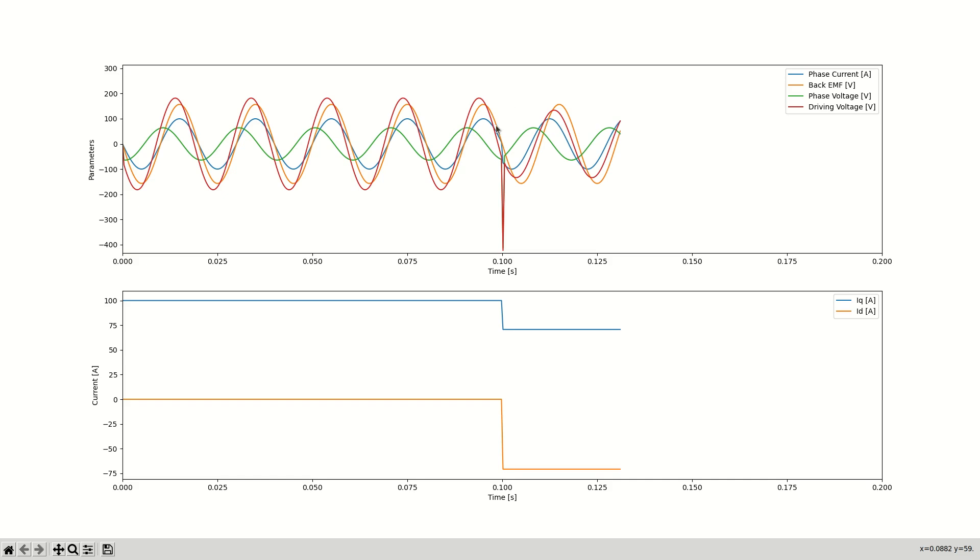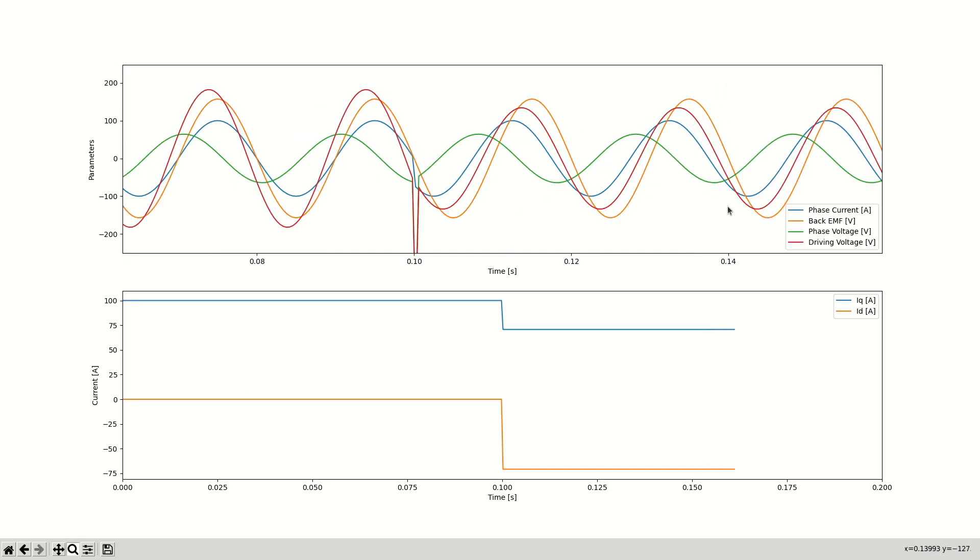We can see that the phase voltage is exactly the same, since the required voltage to achieve the desired current amplitude hasn't changed. However, the driving voltage is lower. That's because of the phase shift we created.